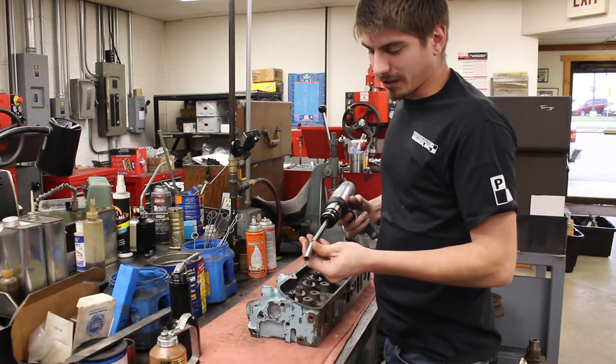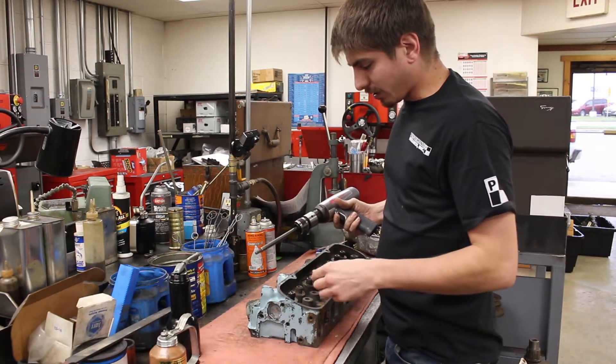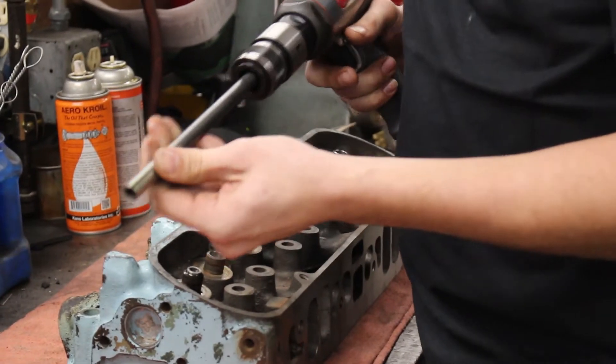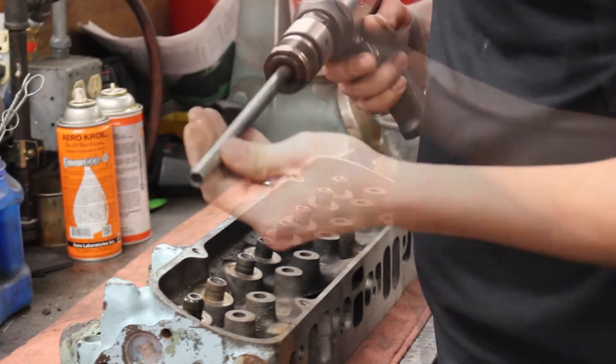We are installing spiral ID guides in this set of iron Pontiac cylinder head. It went from three-eighths to eleven-thirty-seconds. Here we go.